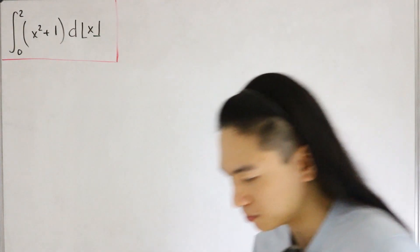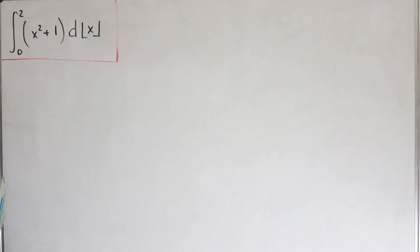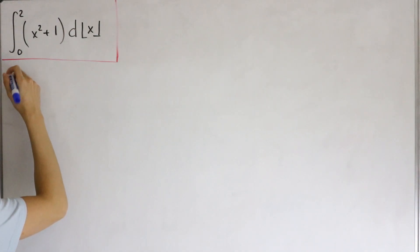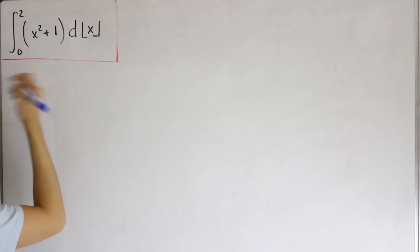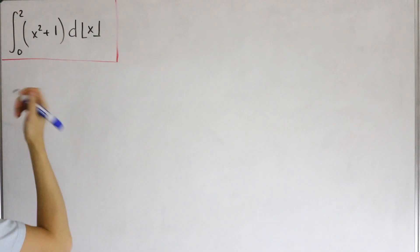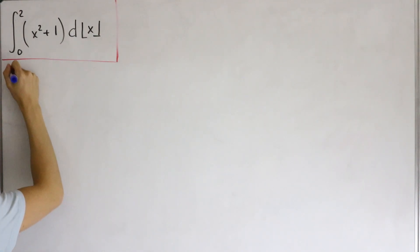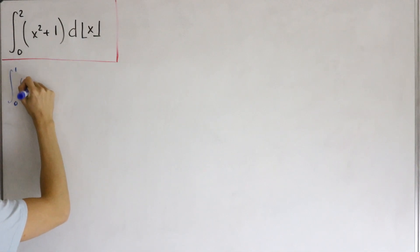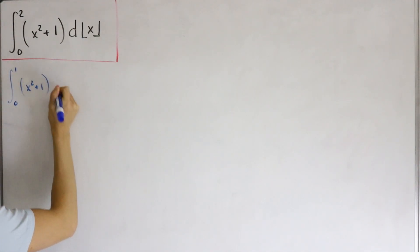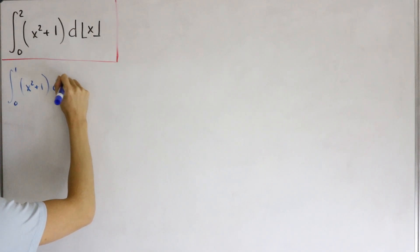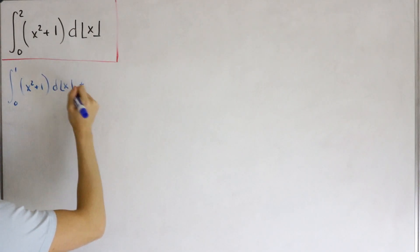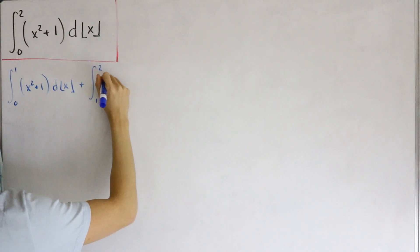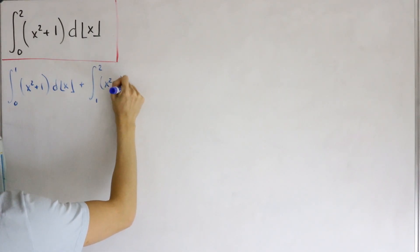First, let's break up our bounds. Using the additivity of integration, we split the integral from zero to two into: the integral from zero to one of x squared plus one d⌊x⌋, plus the integral from one to two of x squared plus one d⌊x⌋.